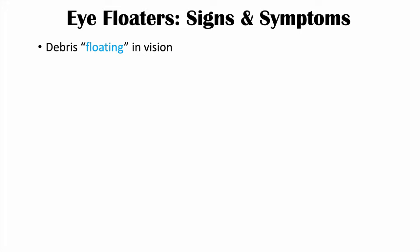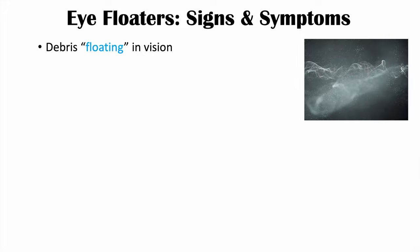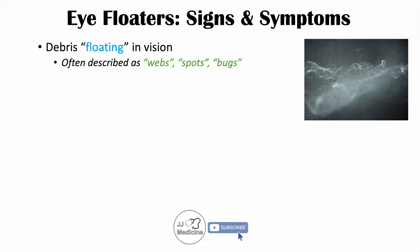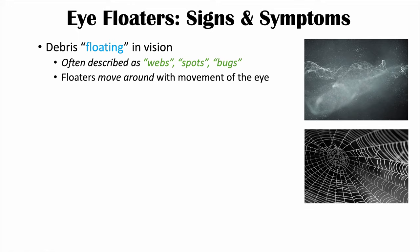The signs and symptoms of eye floaters include debris floating in vision, often described as webs, spots, or bugs. Patients can feel like webs are falling down in their vision, impairing it. If a patient tries to focus on these floaters, the debris will move around, making it difficult to actually focus on — the floaters move around with eye movement.